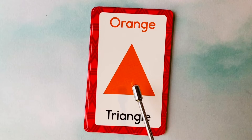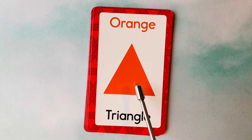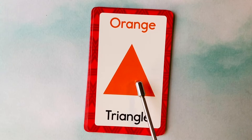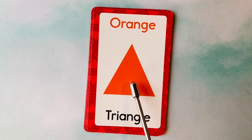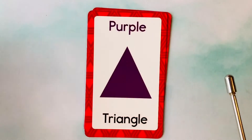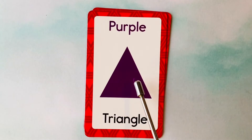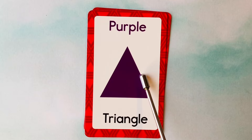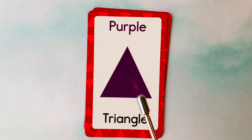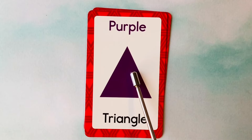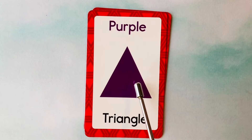This is a triangle. What color is this triangle? It's an orange triangle. This is an orange triangle. This is also a triangle. What color is this triangle? It's a purple triangle. This is a purple triangle.